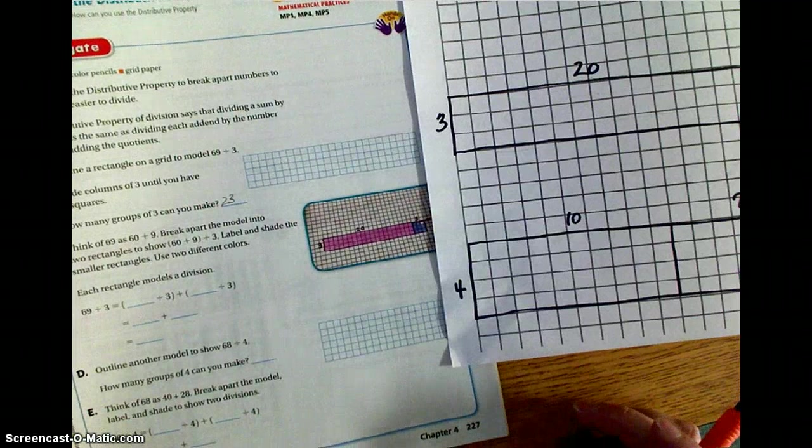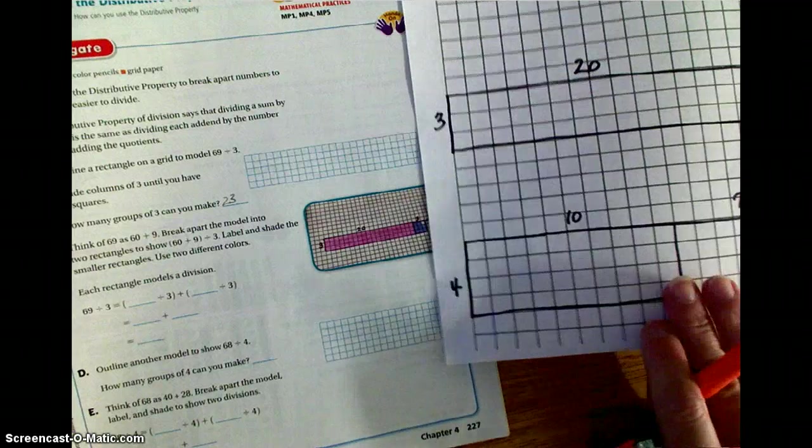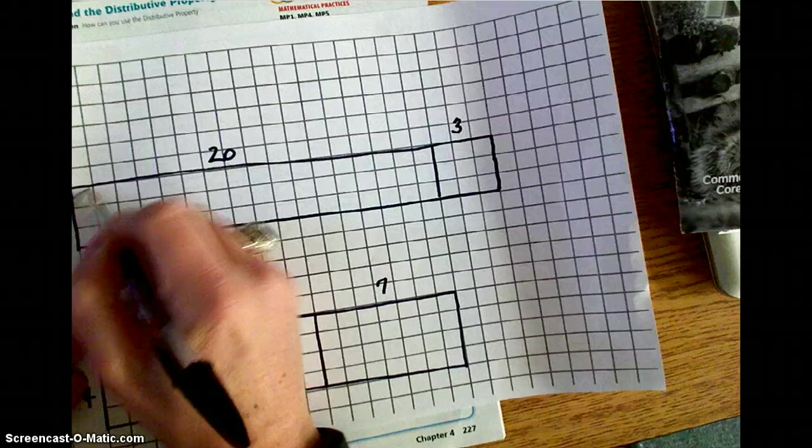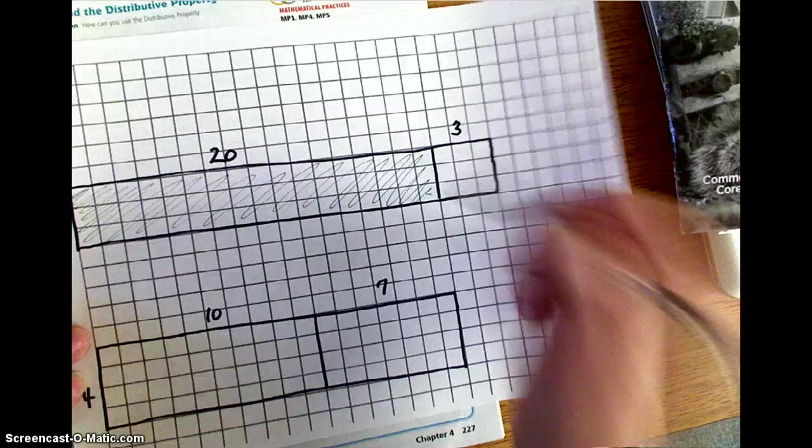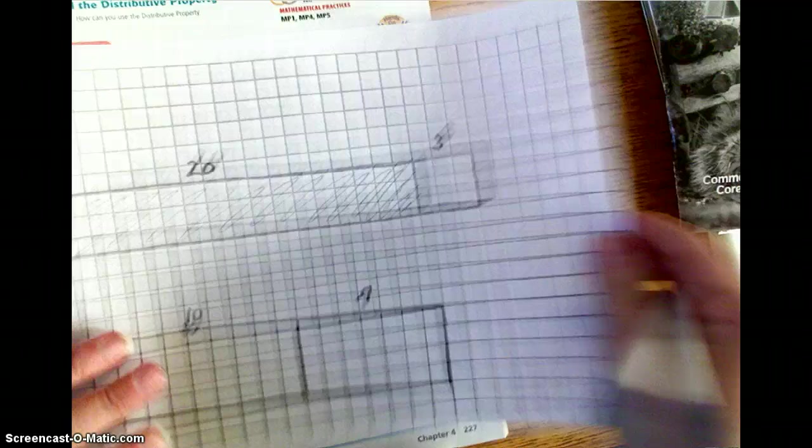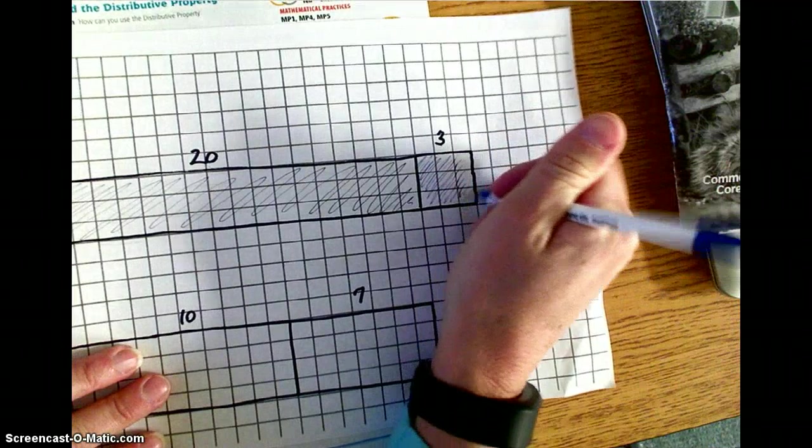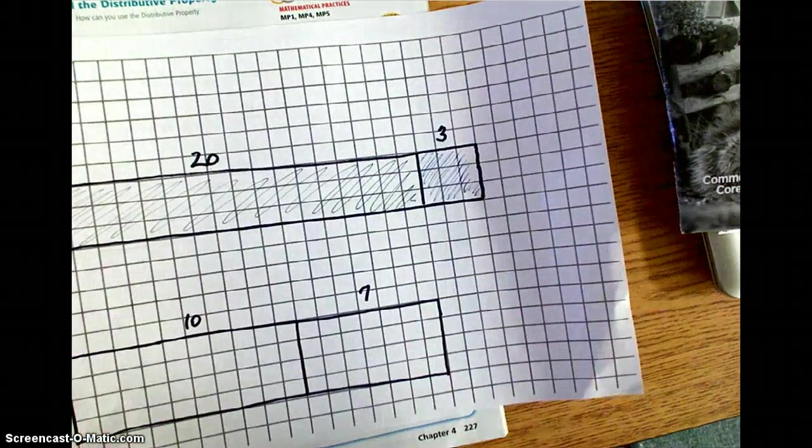Then we are going to label and shade the smaller rectangles using two different colors. So our first rectangle, I'm just going to shade it with a black pen, is going to be shaded a darker color. I'm going to shade that in with one color. And then, your other box is going to be shaded a different color, and I'm just going to use a blue pen to shade that color so that we can see the two different sections. So I have a section of 3 by 20 and a section of 3 by 3.